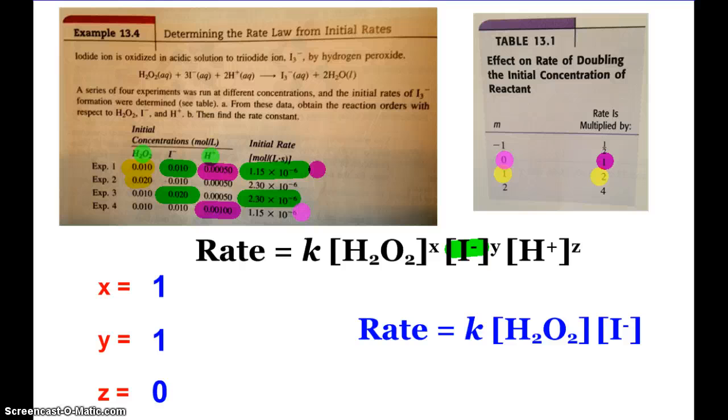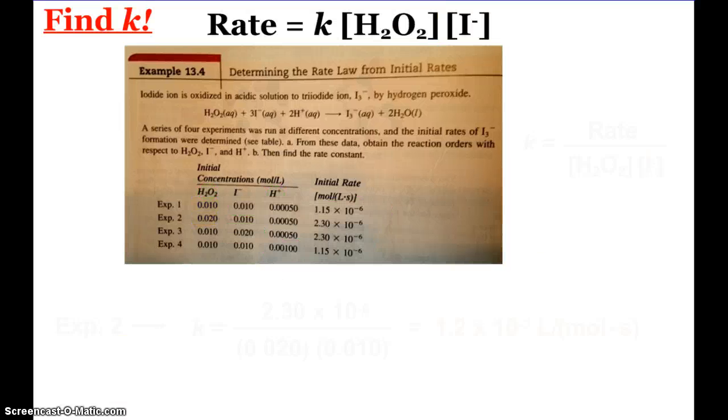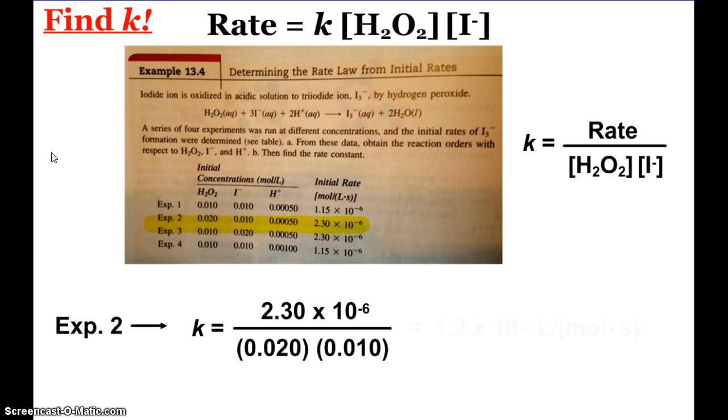The last little thing here is we can find the rate constant from the data that's given to us now that we know our rate law. Our rate law is K times the concentration of hydrogen peroxide times the concentration of iodide. I can rearrange that and see that the rate constant will be the rate divided by those concentrations. So all I do is plug and chug from one of the sets of data. I'll just pick experiment 2. From experiment 2, I plug in my data. Rate is on top, 2.3 times 10 to the negative 6, and on the bottom are the concentrations, 0.02 times 0.01. When I plug and chug, I get the answer of 1.2 times 10 to the negative 2. Figure out the units and make sure they match up, liters per mole second.